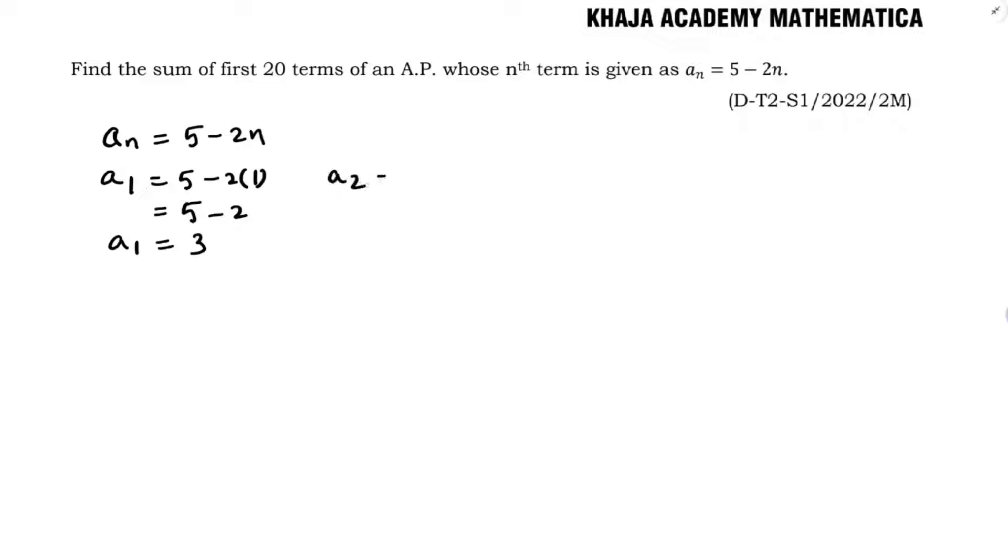Now find A2. 5 minus 2 into 2. 5 minus 4 which is 1. So you have got the series now 3, 1 and so on.